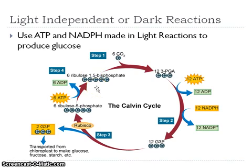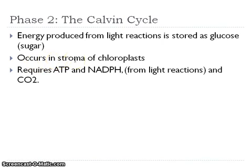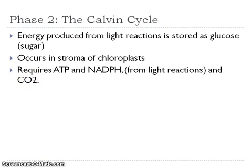We use the yellow beads in class to represent our Calvin cycle. The Calvin cycle uses the energy produced from our light reactions to store it as glucose, and this occurs in the stroma. Phase one was in the thylakoid membrane — now all that moves out into our stroma. We require the ATP and NADPH that we just made, and we also need to get CO2. How do we get CO2 into our leaves? We're using those stomata pores that open with the guard cells.